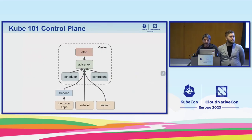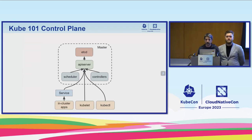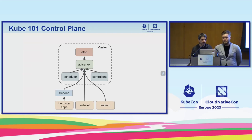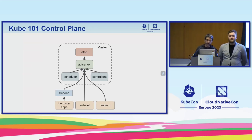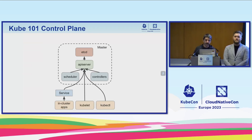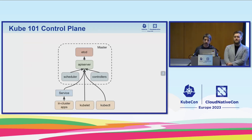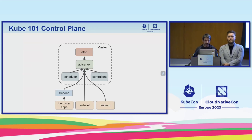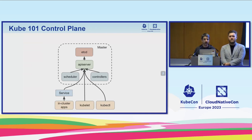We started like everybody with a very simple control plane where you have a single master. You have a single node where you have HCD, which is responsible for storing the resources in your cluster. You have the API server, which is responsible for the Kubernetes APIs. Then you have two core controllers: the scheduler, which is responsible for scheduling workloads on nodes, and controllers, which run the reconcile loops and make sure the state of the cluster is what's expected. Of course, we have all the components interacting with the masters.